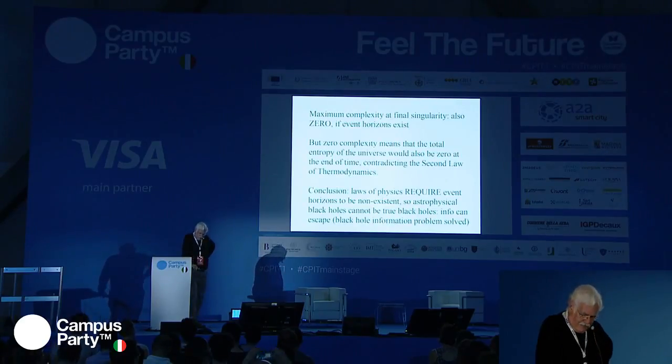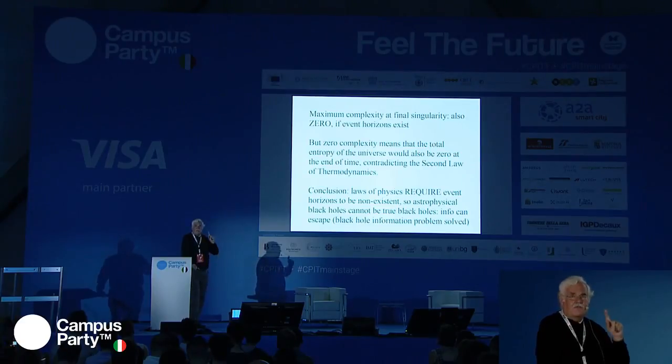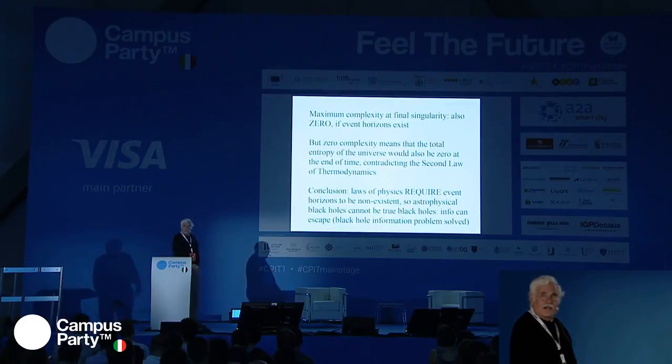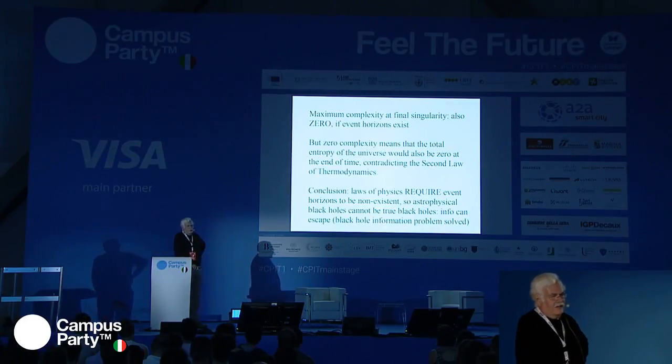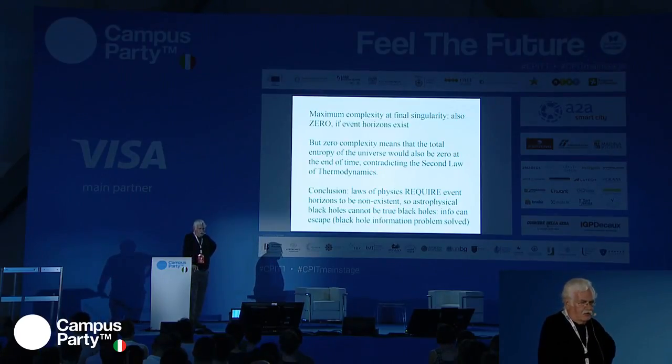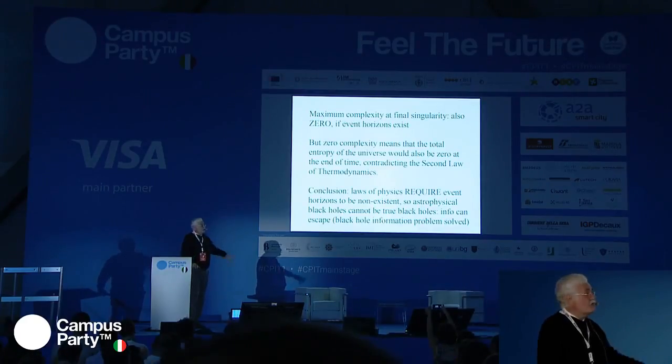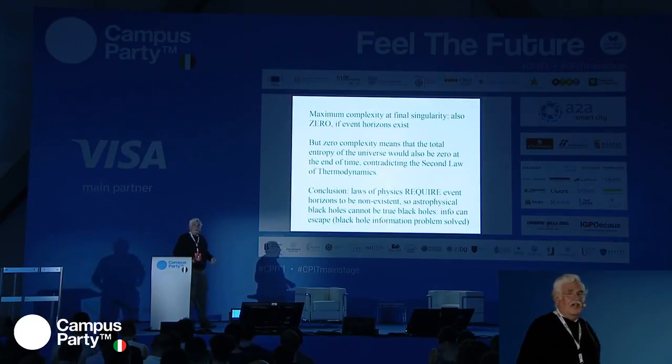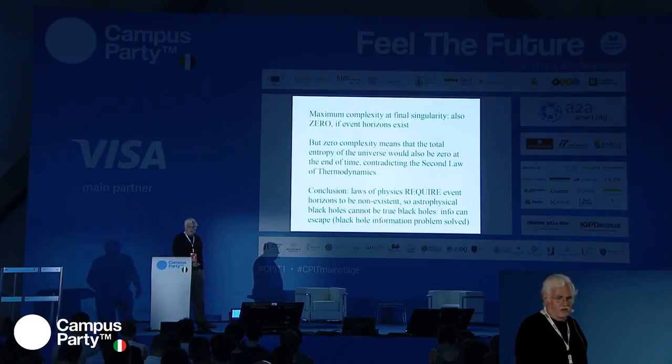If the Bekenstein bound were to apply in exactly the same way at the final singularity, it would also have to be zero — necessarily so, as Bekenstein himself proved, if event horizons actually exist. But zero complexity means the total entropy of the universe would also be zero at the end of time. Since entropy is non-zero now, and the second law of thermodynamics says entropy can never decrease, if the universe went to zero complexity at the final singularity, it would violate the second law. The conclusion: laws of physics require event horizons to be non-existent.